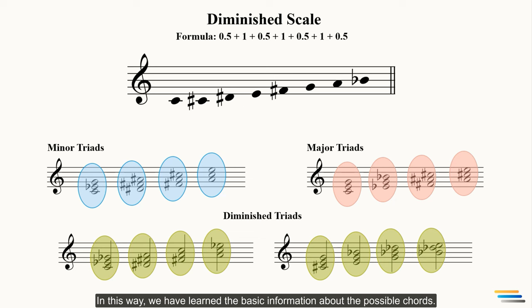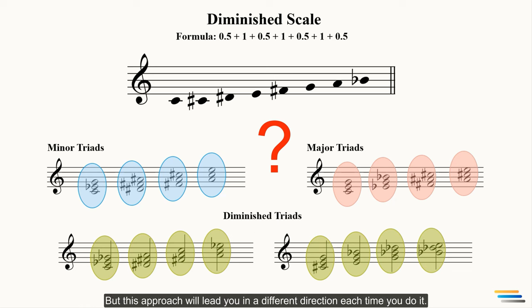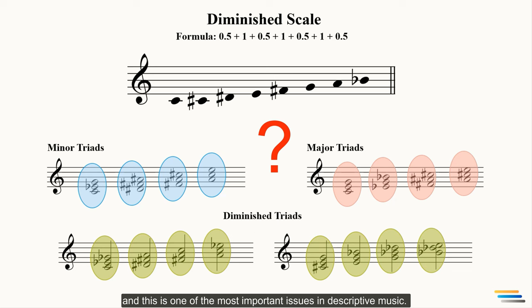In this way, we have learned the basic information about the possible chords. You can have completely different harmonies by random arrangement of these chords, but this approach will lead you in a different direction each time. However, if we consciously combine chords, we can create different musical emotions, and this is one of the most important issues in descriptive music.